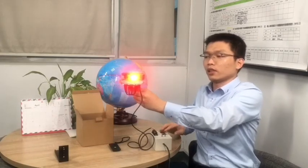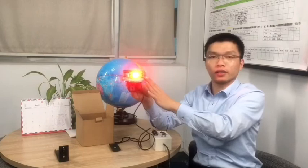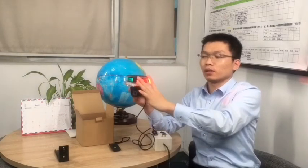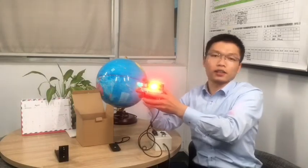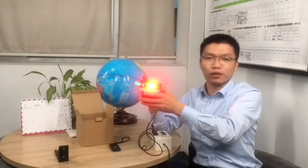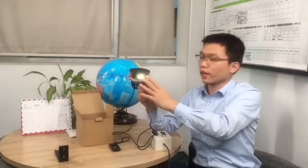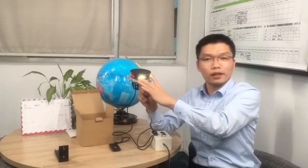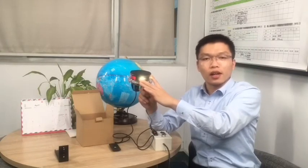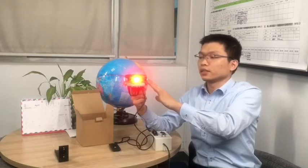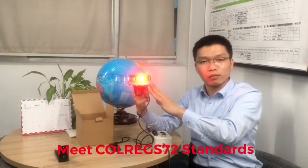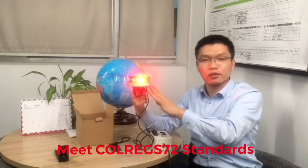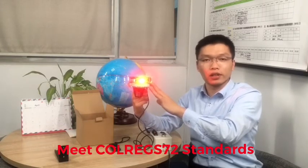You can also switch to the navigation light type. The red light on the right or green light is 112.5 degrees and the tail light is a 135 degree angle white light. Both the navigation light and angle light have more than two nautical miles visual distance, which is designed according to COLREGS standard.